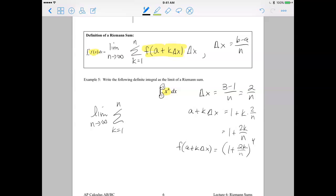Okay. So now I'm ready to just plug that into my formula here. So f of a plus k delta x is going to be 1 plus 2k over n to the fourth multiplied by delta x. And delta x was 2 over n.